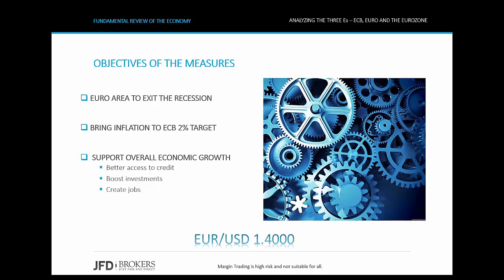These measures were aiming to help the Euro area exit the recession, as well as to bring inflation back to levels in line with the ECB's 2% target. They were also taken to help businesses across Europe enjoy easier access to credit, boost investments, create jobs, and thus support overall economic growth. It's worth noting that at that time the Euro-Dollar exchange rate was around 1.40, and following the measures applied by the ECB, the pair surged by 7% to 1.50 in December 2009, near a one-and-a-half year high.